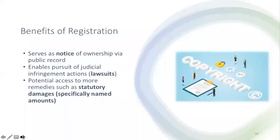Arguably one of the most important benefits of copyright registration is that it enables you to pursue legal enforcement of your copyright. In fact, you must have a copyright registration in order to pursue copyright infringement claims against another party. Another benefit is that registration puts the public on notice that a particular work is protected by copyright. Additionally, timely copyright registration provides access to additional remedies in infringement claims, such as statutory damages — specifically named dollar amounts for infringement — and recovery of attorneys' fees. If you haven't registered the copyright yet when you discover someone violating your right, you have six months from when you discovered the infringement to register.